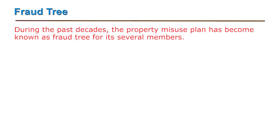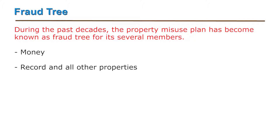Fraud tree: during the past decades, the property misuse plan has become known as the fraud tree for its several members. The tree's trunk consists of two main property categories such as money, and second, records and all other properties.